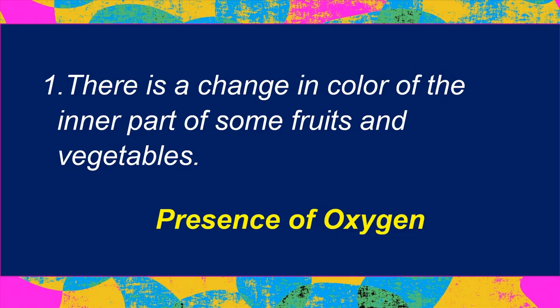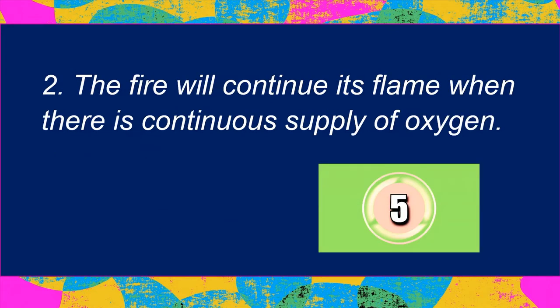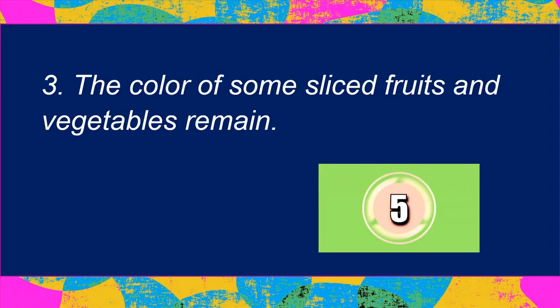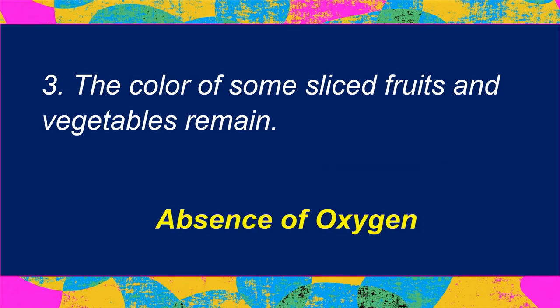Number 2: The fire will continue its flame when there is a continuous supply of oxygen. The answer is: presence of oxygen. Number 3: The color of some sliced fruits and vegetables remains unchanged. The answer is: absence of oxygen.